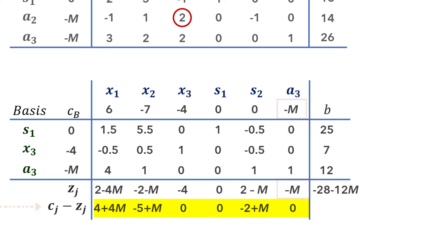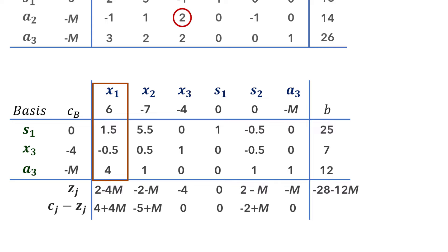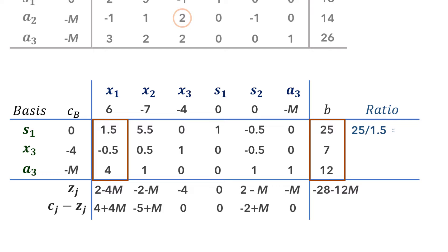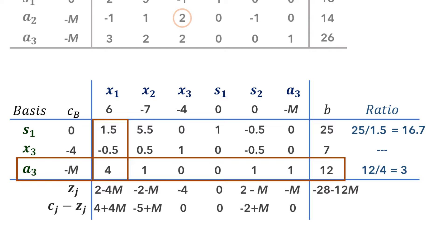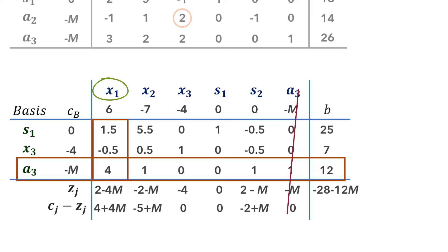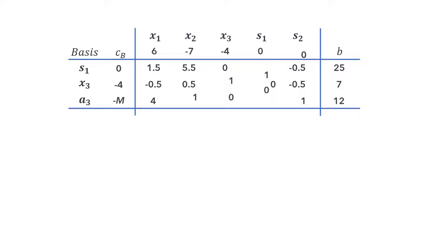Since m is a large positive number, the largest positive value on the net evaluation row is 4 plus 4m, indicating the pivot column is the x1 column and the entering variable is x1. To determine the pivot row, we divide b column entries by positive pivot column entries: 25 over 1.5 = 16.7; we skip the second row (negative pivot column entry); 12 over 4 = 3. The minimum non-negative ratio is 3, so the pivot row is the third row, A3 leaves the basis, and the pivot element is 4. Since A3 is an artificial variable, it can be removed from the tableau columns.